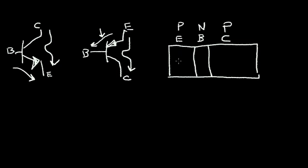Now the emitter is very heavily doped with holes, and the base is very lightly doped. So when the emitter-base junction becomes forward biased, we inject a large amount of holes into this base region. Most of these holes will flow across the base into the collector region, and a small number will flow out the base terminal. So again, we have a very small base current, and we get a large current flowing from emitter to collector — we'll call this I sub C.